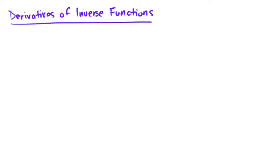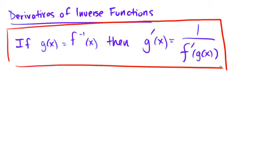Okay, derivatives of inverse functions. Here's the big picture. So if you're given f of x, then g of x can be the inverse, f to the negative 1 of x, and the derivative of the inverse is equal to 1 over f prime composed of g of x.